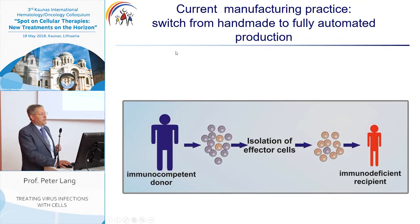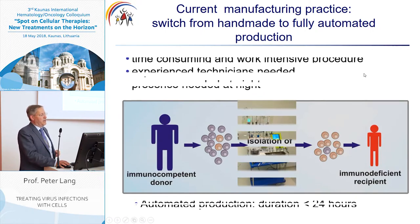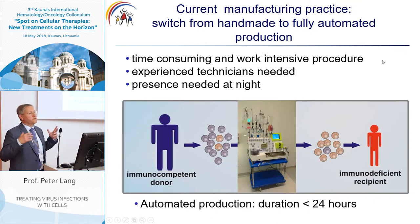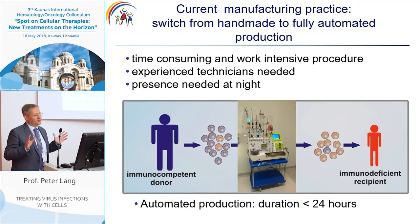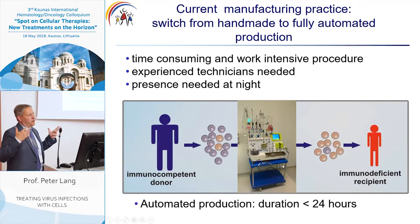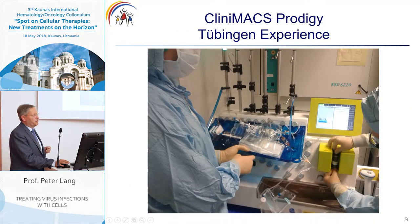Now I would like to talk about our current manufacturing practice. At the moment, we are switching from handmade to fully automatic production. The handmade production is very time-consuming and intensive — it requires very experienced technicians and the presence of a technician at night, which is very uncomfortable. With the automatic device, we can perform an almost completely automated production. This reduces the overall duration to less than 24 hours. Our experience is with this automated device called Prodigy.